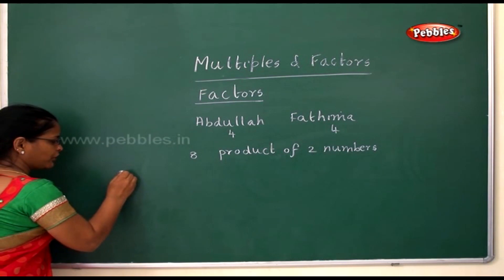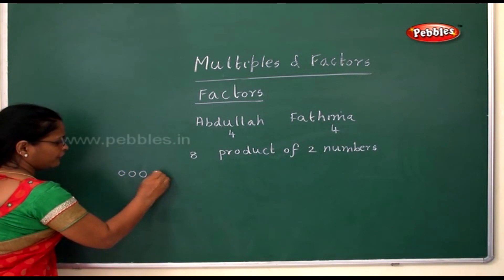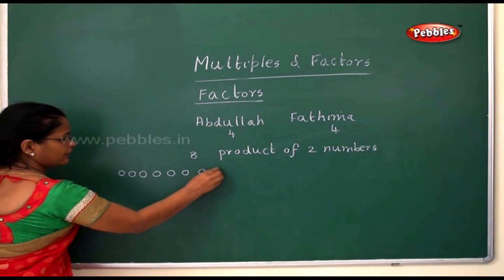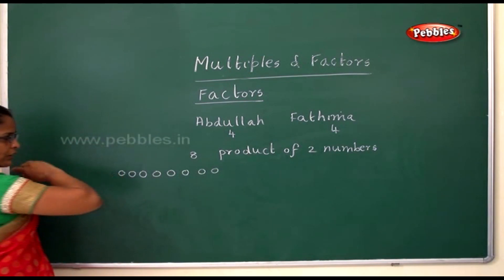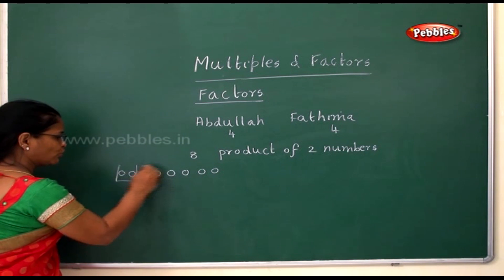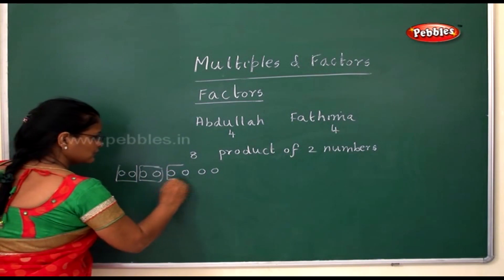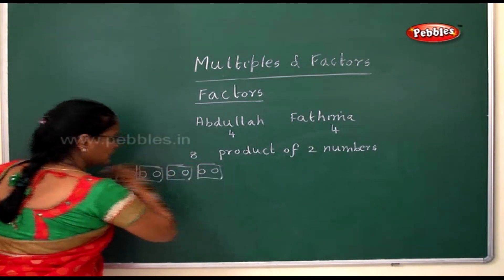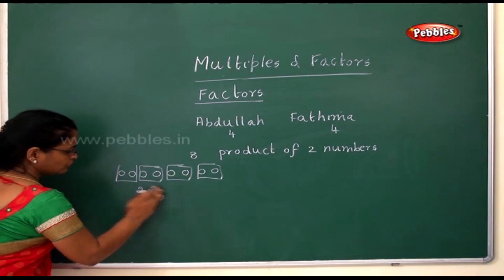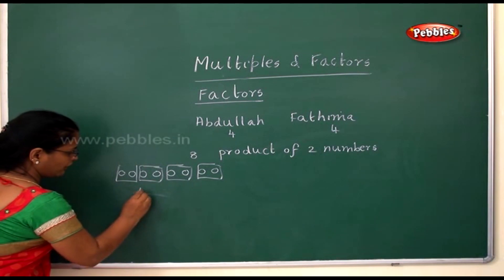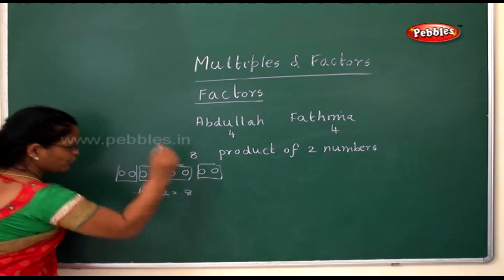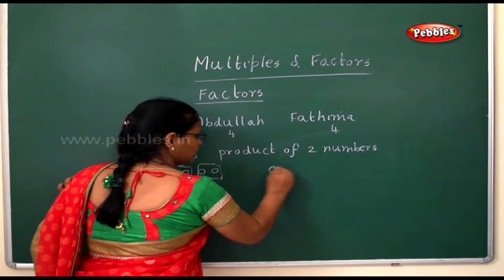Immediately, Fatima started placing eight balls — one, two, three, four, five, six, seven, eight. Then she started splitting them into groups of two. That gave her four groups of two, so four into two equals eight.